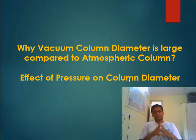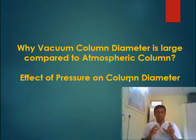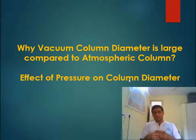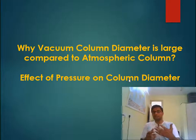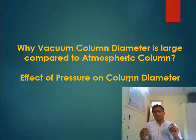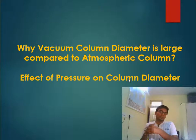You might have visited a refinery and seen many columns inside. Have you noticed that the column diameter of a vacuum column is much larger compared to an atmospheric column? Have you thought about why this is so? One possible answer is that the vacuum column throughput might be larger, but even for the same throughput, the vacuum column diameter is still larger. Why?